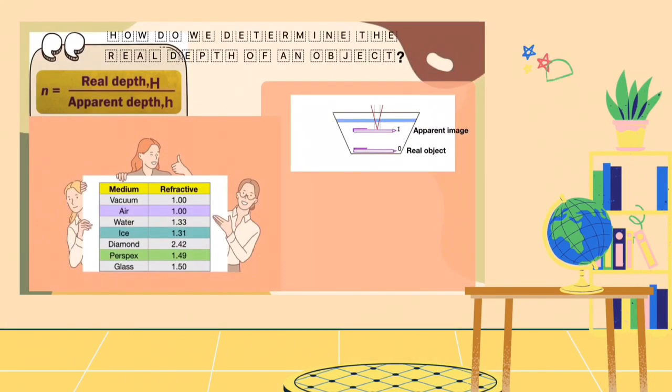Here is the example of the calculation. We can determine the real depth of an object in water by using its apparent depth and refractive index of water. Based on this formula, we can determine the real depth by multiplying the refractive index with the value of apparent depth.